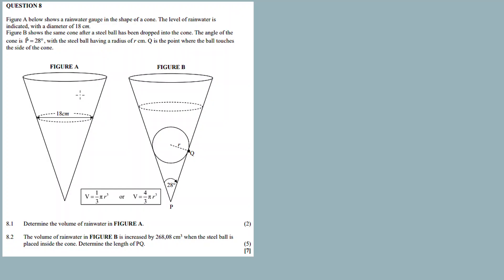So we have Figure A — a cone — and Figure B — also a cone but with a sphere inside. Now for our formulas: this one is the formula for a cone and this one is the formula for a sphere. You need to know both formulas.